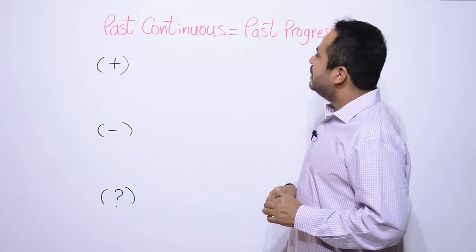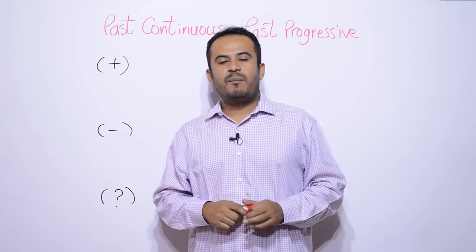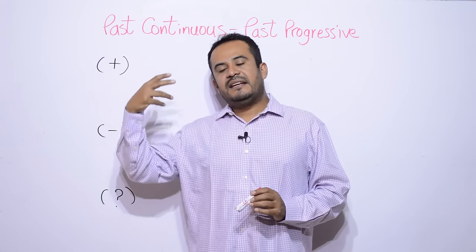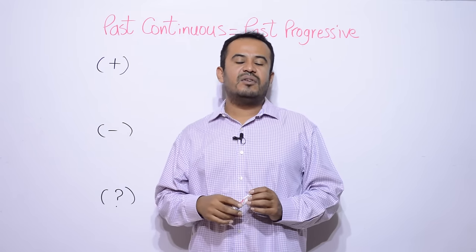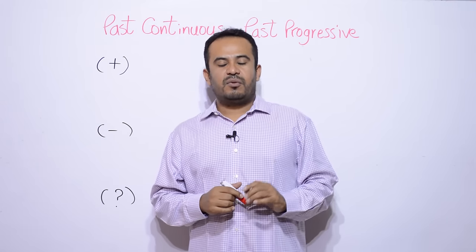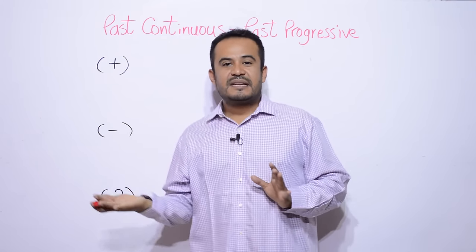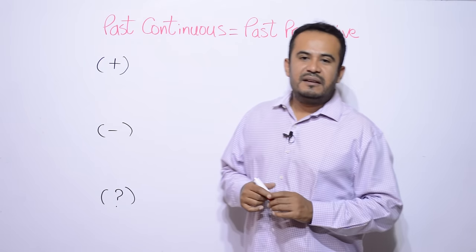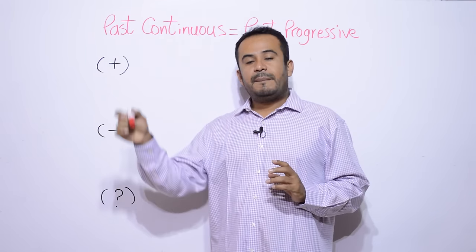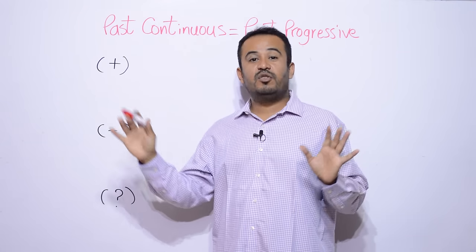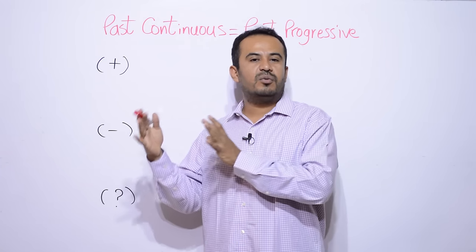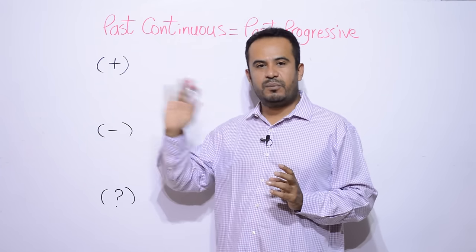El pasado continuo primeramente te voy a explicar que es un tiempo verbal que sirve para describir eventos que se estuvieron desarrollando en un tiempo en el pasado pero que tuvieron cierta duración. Por su parte contraria, el pasado simple es para describir eventos que sucedieron en un momento en el pasado y ya, pero que no tuvieron cierta duración. No es interesante o no nos interesa saber cuánto duró ese evento. Simplemente sucedió y punto.